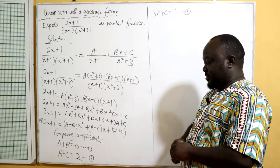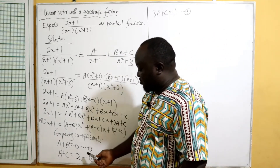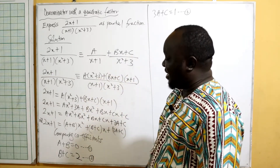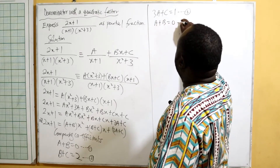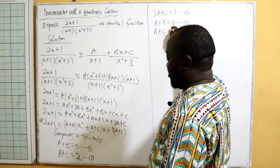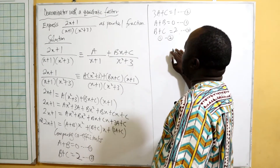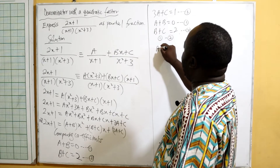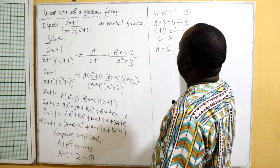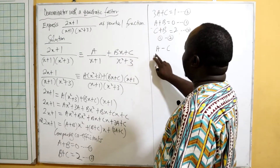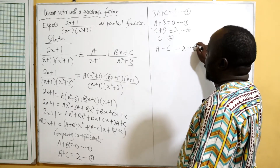This is a simultaneous equation in three variables. In equations one and two, b appears positively in both, so we eliminate b. Equation one minus equation two gives a minus c equals negative two — call this equation four. We now have equation four: a minus c equals negative two, and equation three: 3a plus c equals one.